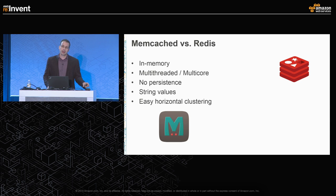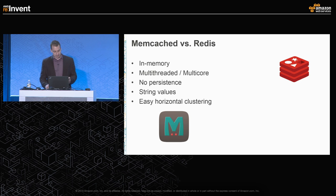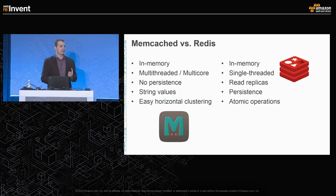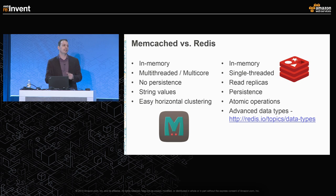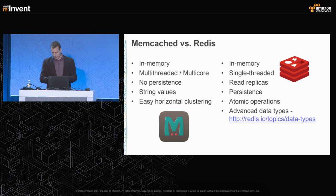If you're looking for something more durable and persistent but still with the in-memory performance of Memcached, this is where we offer Redis. Redis is more of an in-memory key-value data store — not just for caching. It provides high availability and persistence options, including read replicas in a primary-replica configuration. It also provides more sophisticated data types such as lists, sets, and sorted sets. I encourage you to attend the ElastiCache deep dive session tomorrow morning where we go deeper into each of these and their cool use cases.